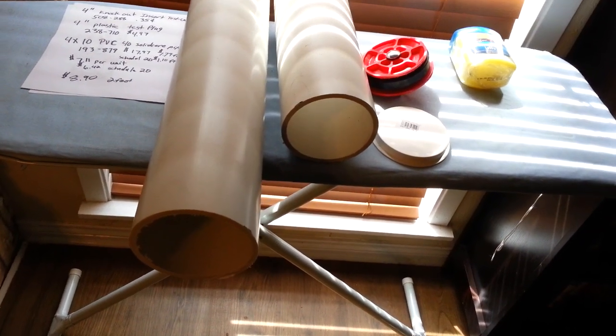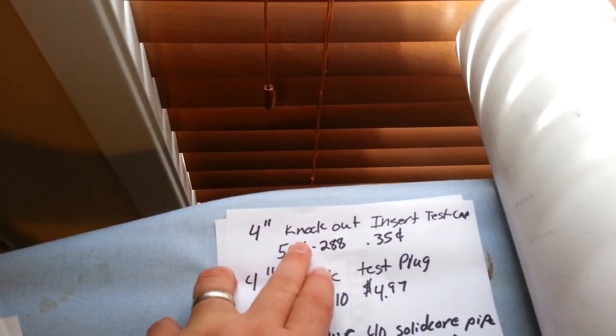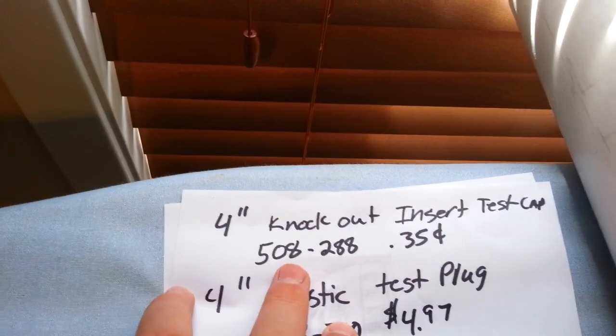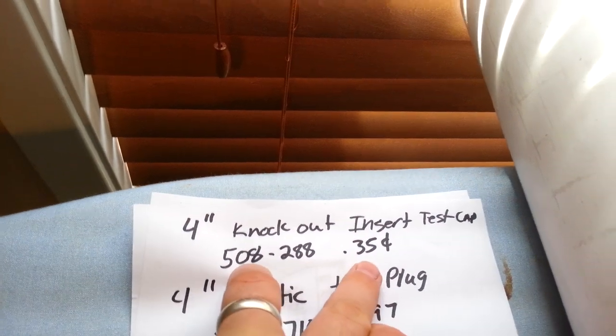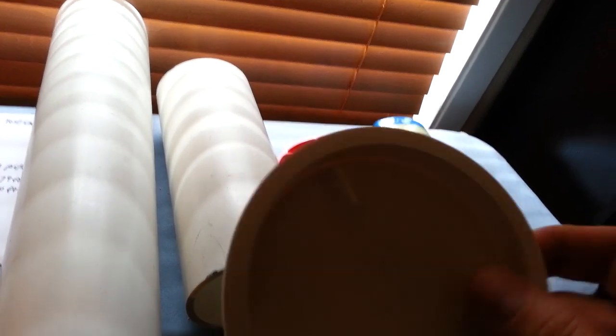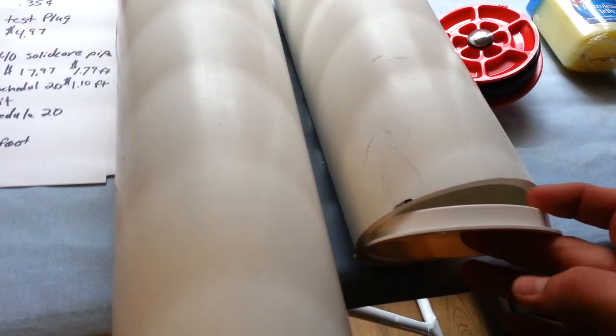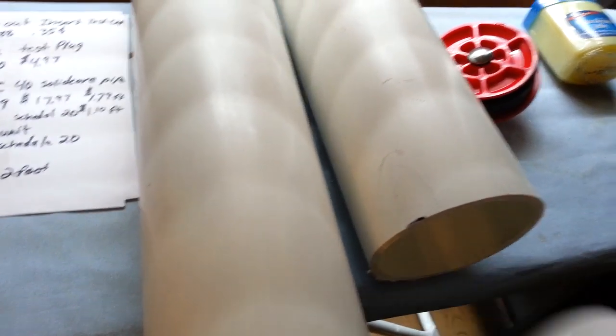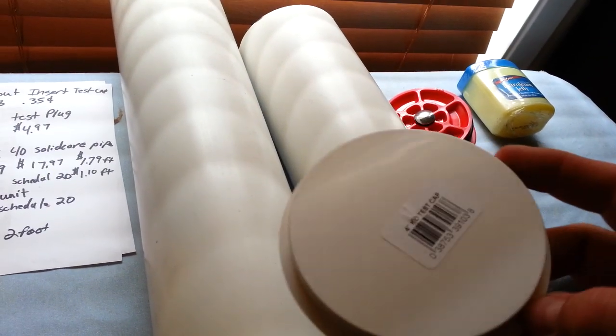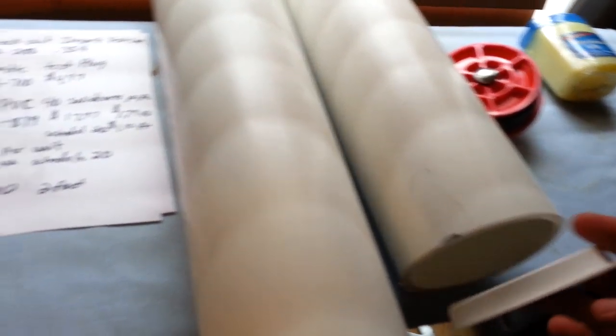First things first, we got the 4-inch knockout insert. That's SKU number 508288 and it's 35 cents a piece. Now this one here, super simple and easy. If you are not worried about water, you could just stick it in the end of your tube. If you are worried about water, you can put a little bit of silicone or some PVC cement. You just put it in the end, just like that, and it's ready to go.